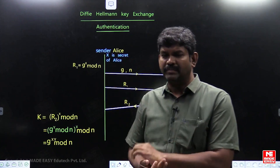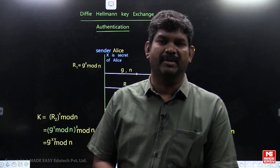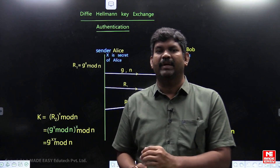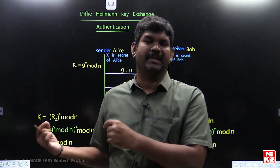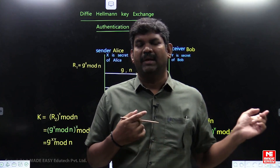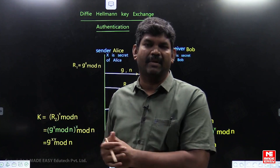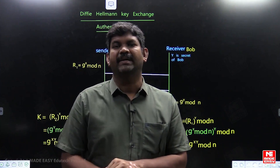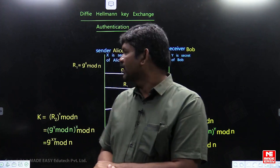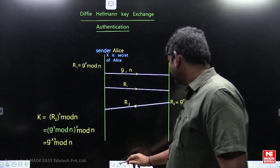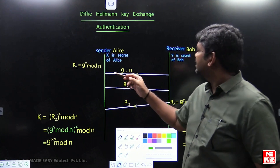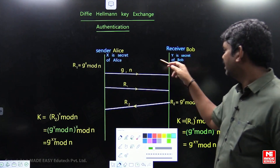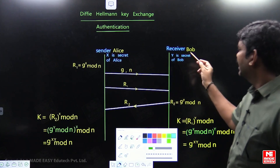The Diffie-Hellman Key can also be used for authentication — proving the user's identity. When X has sent content to Y, Y can later prove that this message came from X with the help of that key value. That is called proving the user's identity or the integrity of the user. Now, on the sender side we take a name like Alice, and on the receiver side a name like Bob.